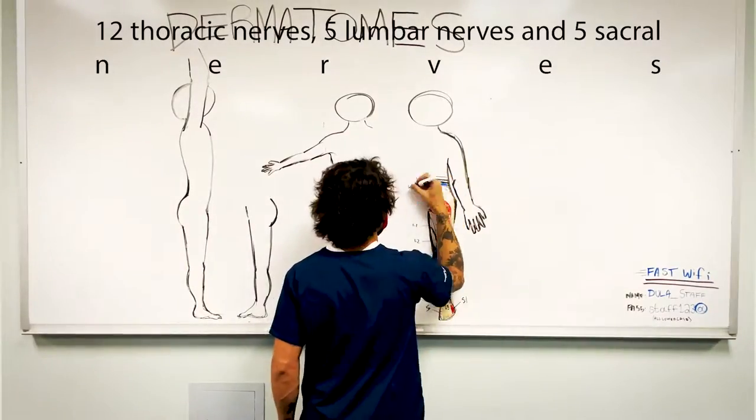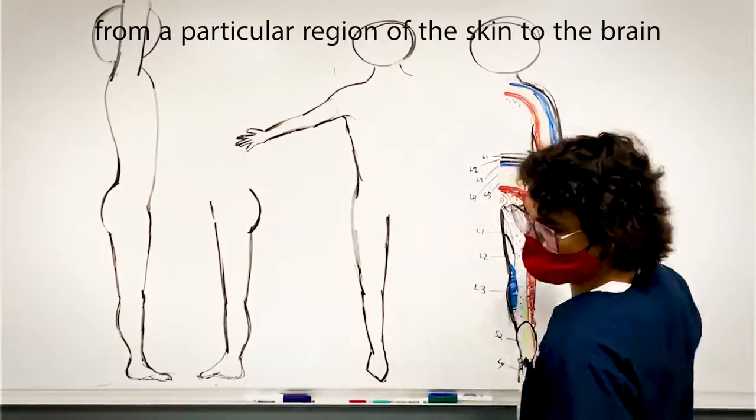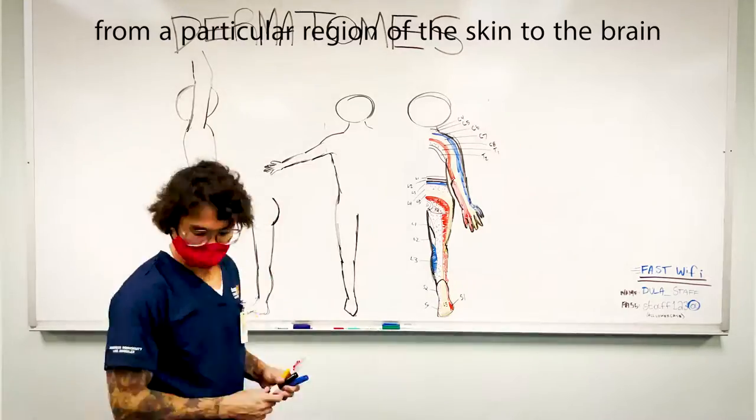There are 12 thoracic nerves, five lumbar nerves, and five sacral nerves. Each of these spinal nerves relays sensation from a particular region of the skin to the brain.